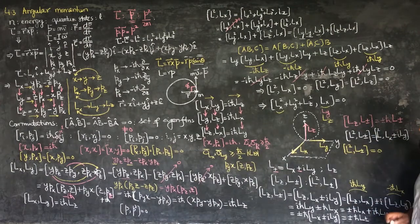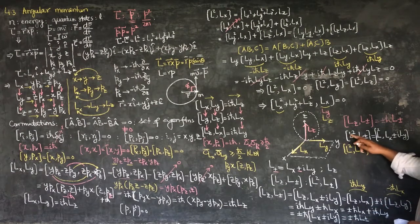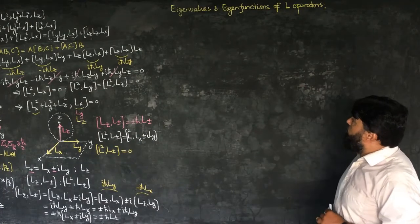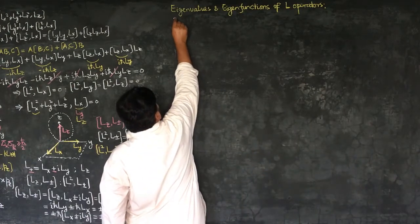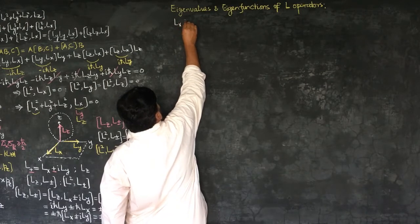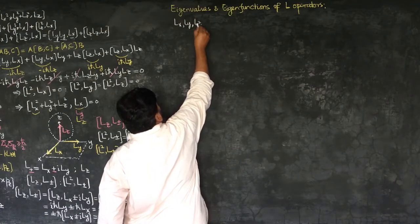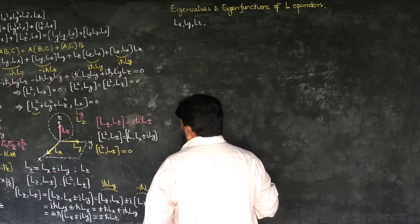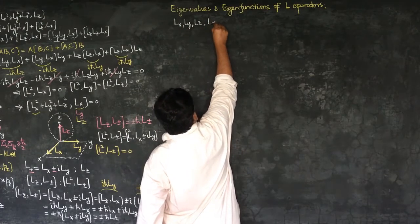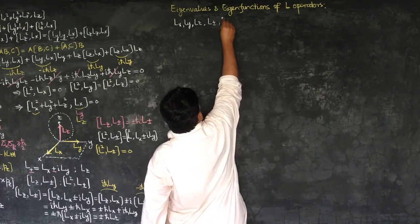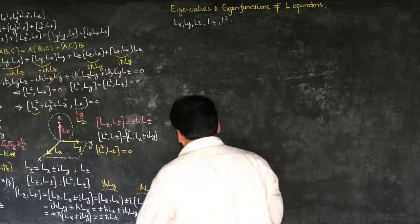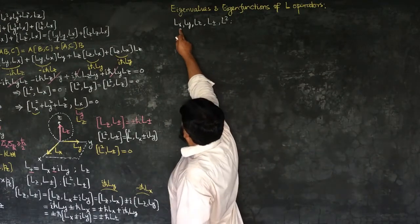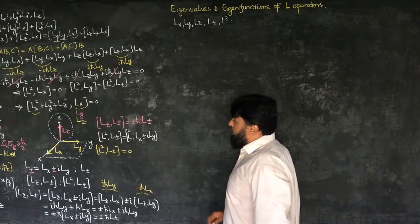Now we will go to some other relations: the eigenfunctions and the eigenvalues of these operators. We have the operators LX, LY, LZ — the components — and then the combination of LX and LY which is L plus/minus, and we have the L² operator. Out of these operators, LX, LY, and LZ are not commuting with each other.